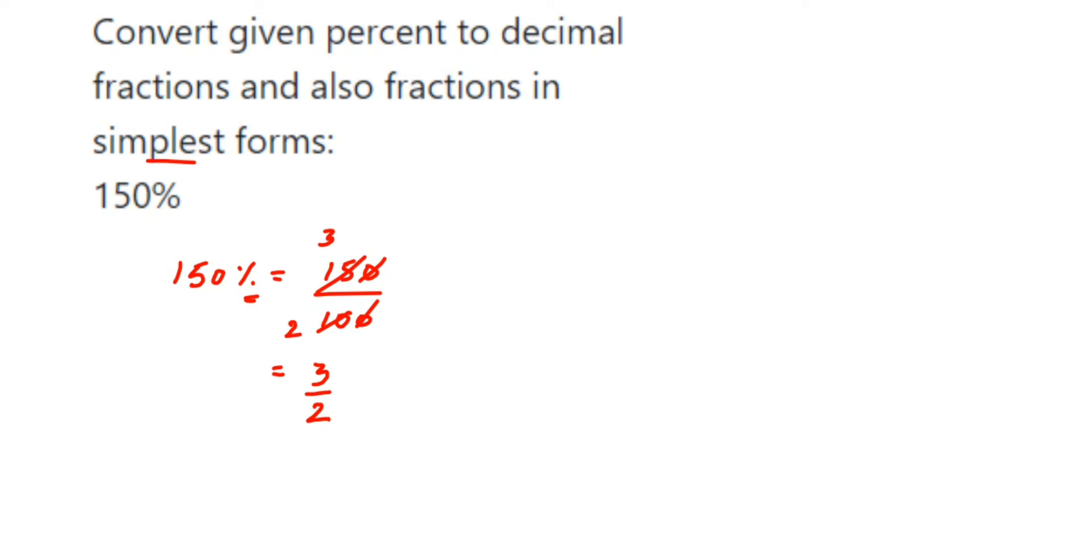Now from here, from here itself, that is from three by two, you can divide this number, you can get the decimal form. Or you might have also learned that how to convert fractions into decimals when you have zeros in denominator.